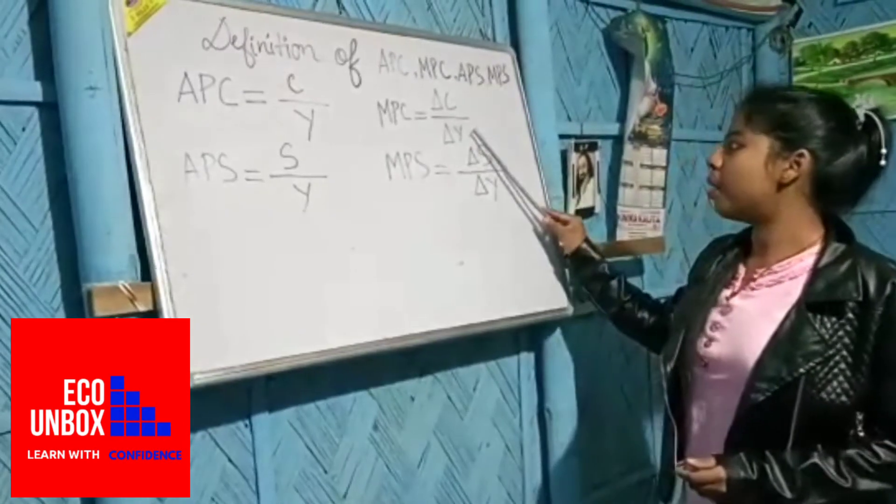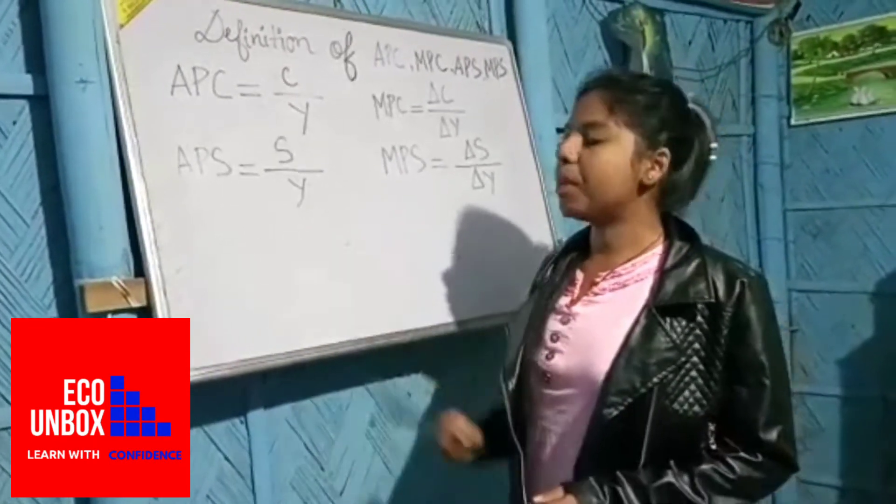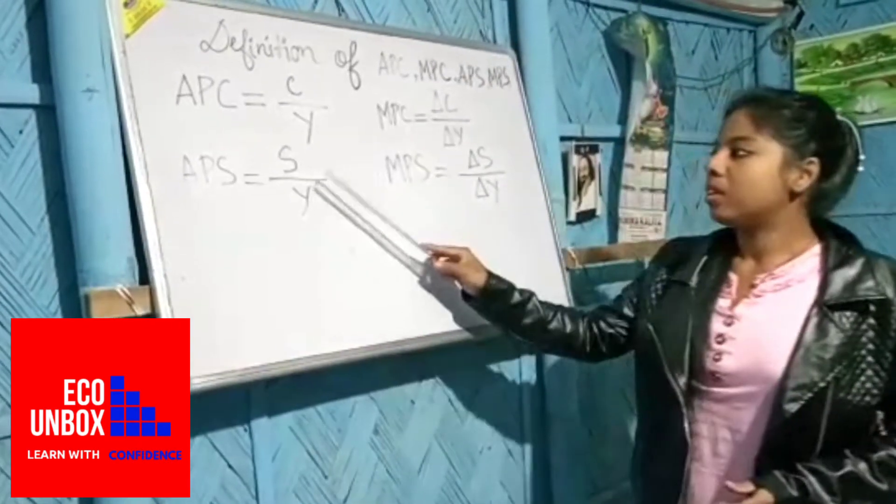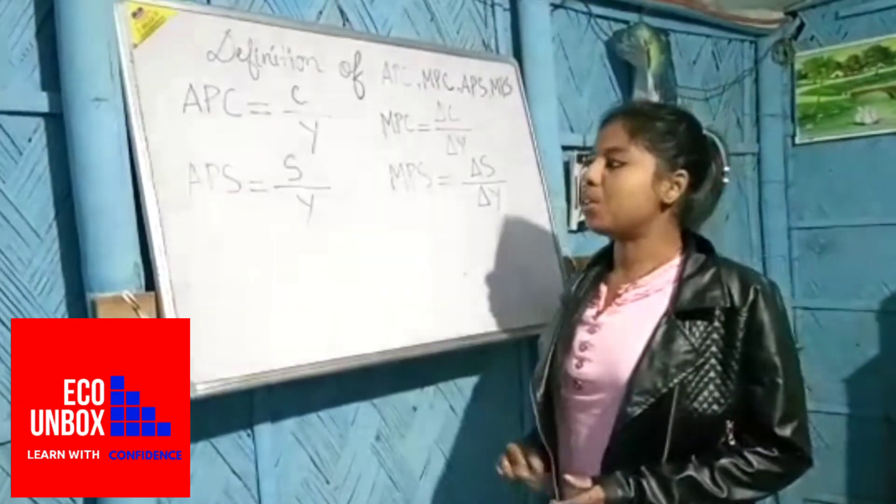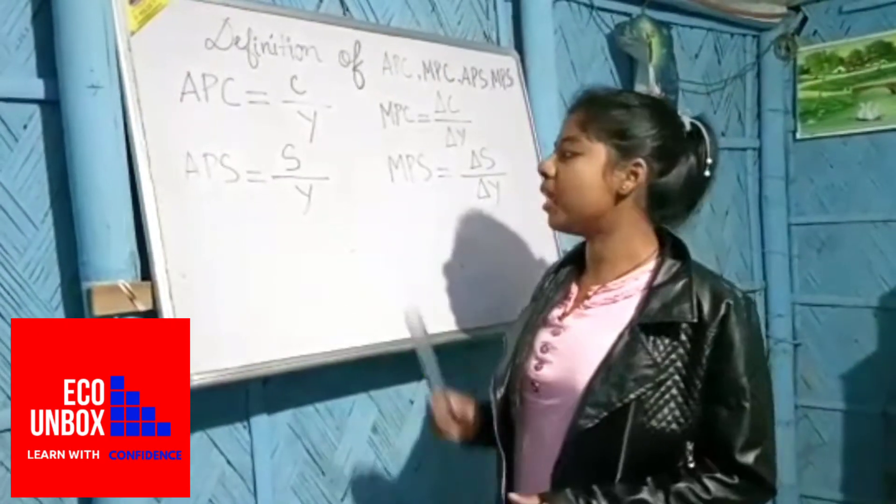Next concept is APS. APS can be defined as the ratio of total saving to total income. So symbolically, APS equals S by Y, where S means total saving and Y means total income.